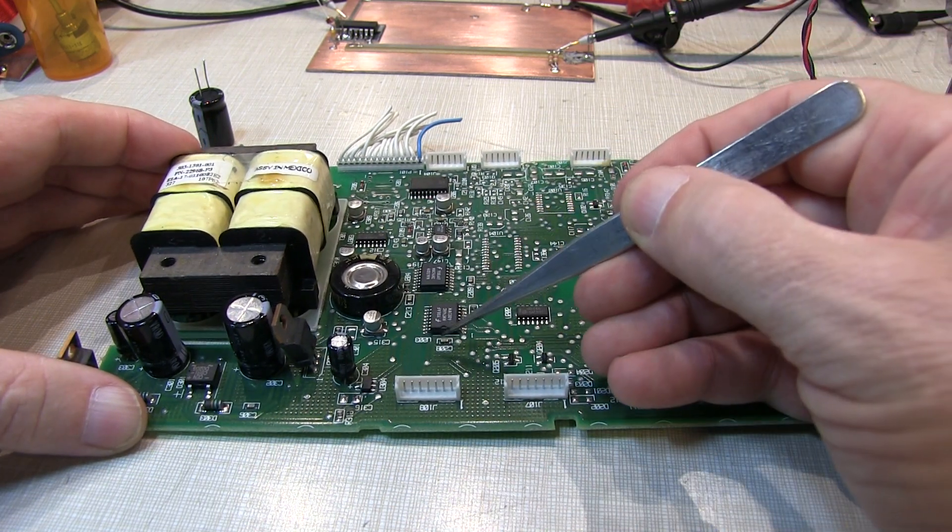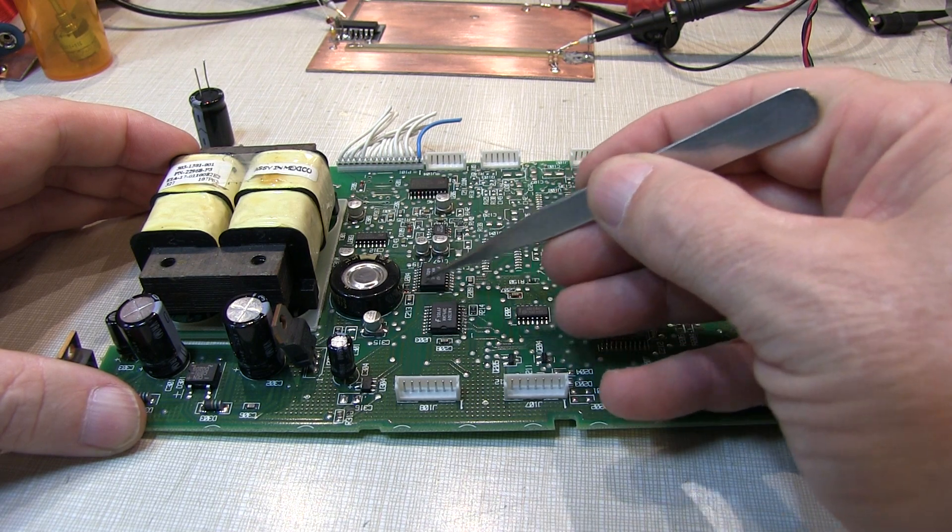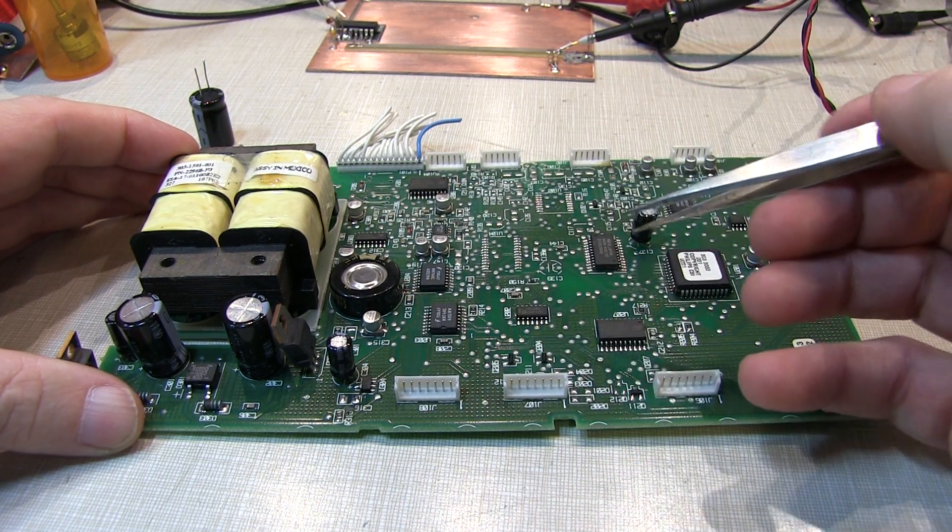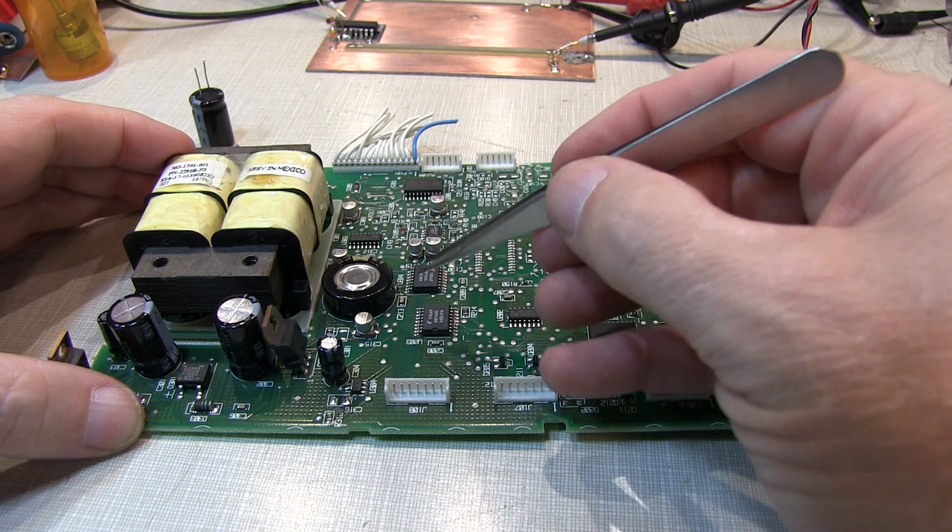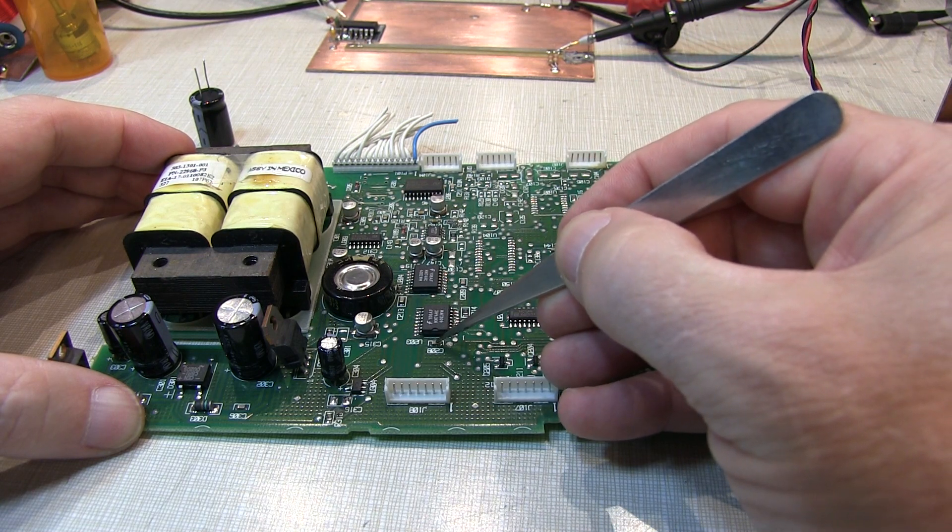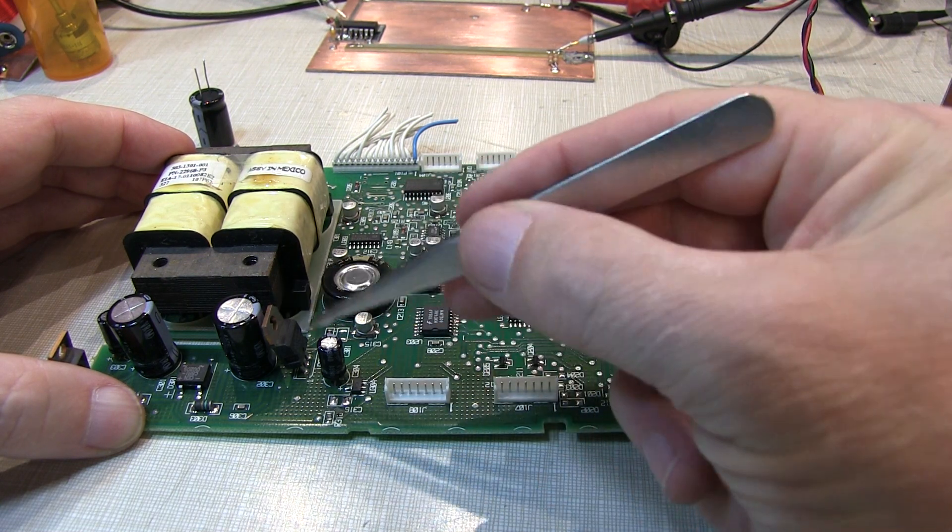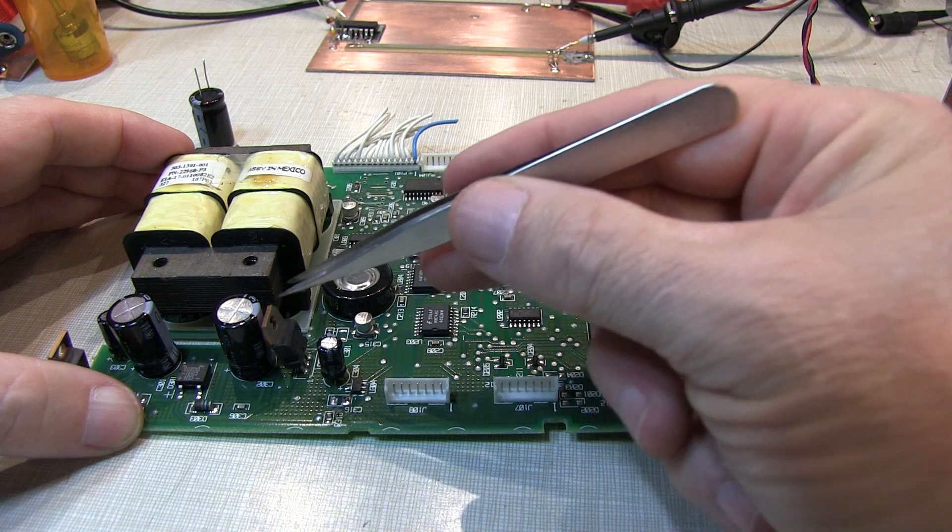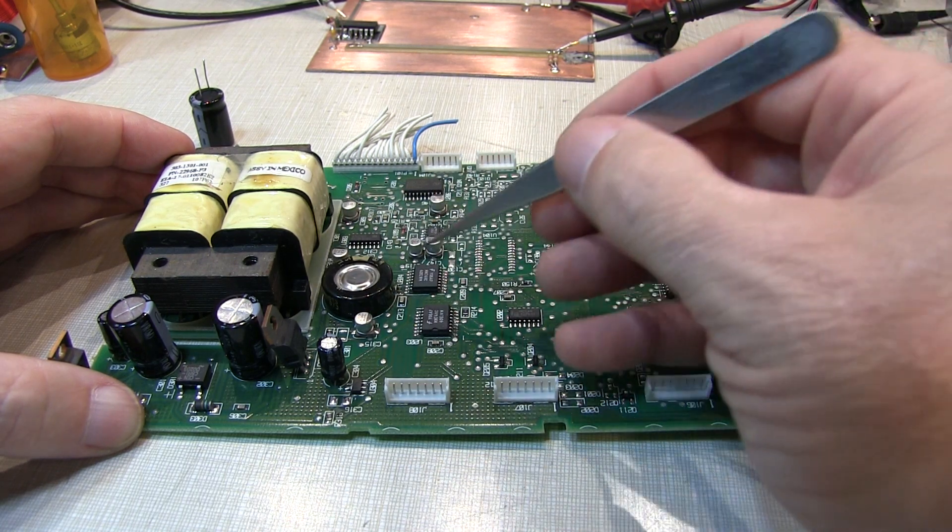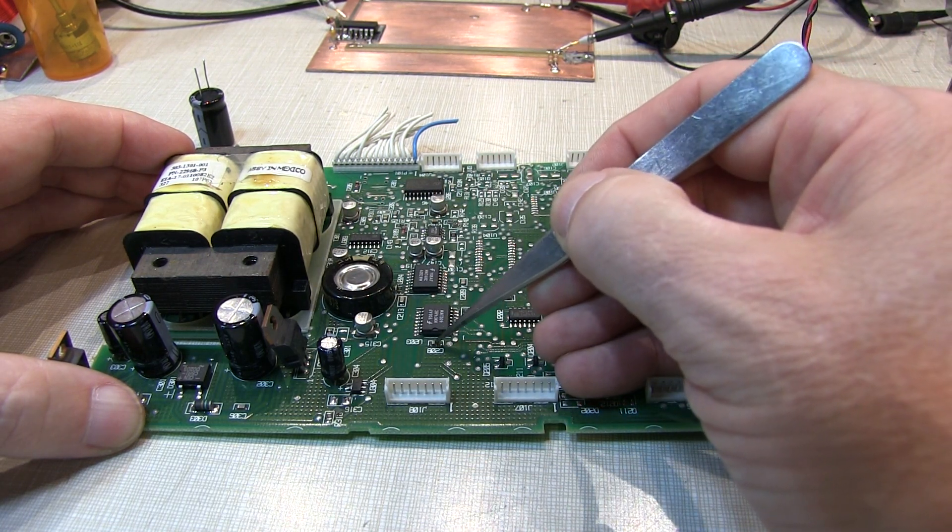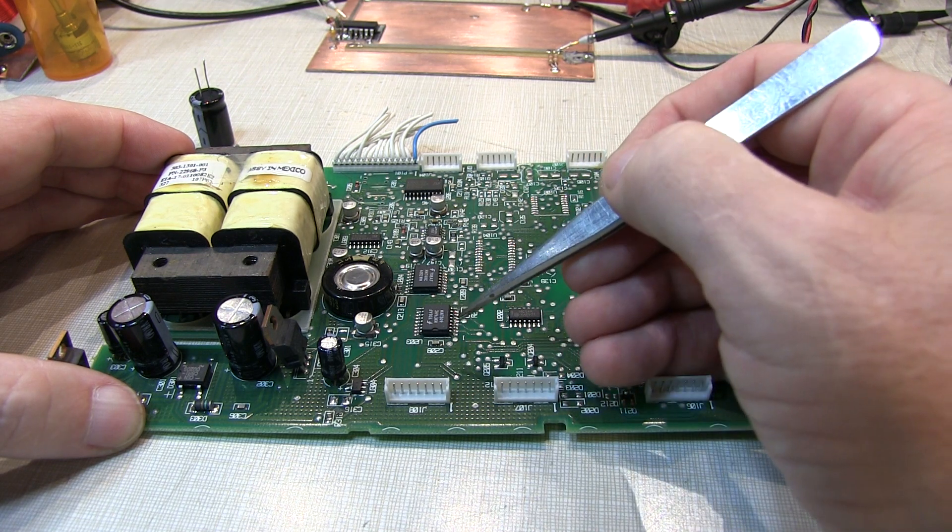While these smaller surface mount capacitors are placed very close to various active devices, they form a different role. They also provide local charge storage, but not nearly as much charge as the bulk electrolytic capacitance. But more importantly, what they provide is a return path for high-speed signal currents.